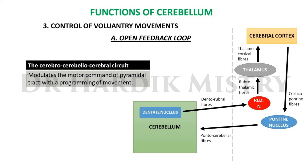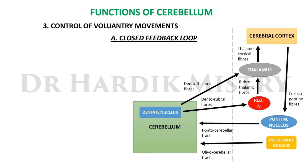The cerebro-cerebello-cerebral circuit modulates motor commands of the pyramidal tract by programming movement. The closed feedback loop is formed by fibers from the cerebral motor cortex to the paravermal cerebellum and back. Its afferent limb consists of collaterals of the corticospinal tract synapsing with ipsilateral pontine nuclei, inferior olivary nuclei, and contralateral reticular nuclei. Pontocerebellar and olivocerebellar fibers reach the contralateral cerebellar cortex, while reticulocerebellar fibers project to the ipsilateral cortex — all connected to the paravermal area and deep nuclei (nucleus interpositus and dentate nucleus).